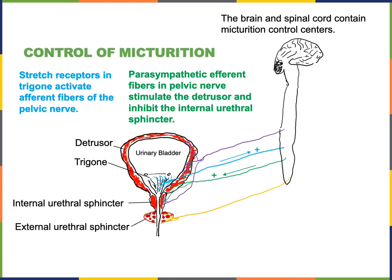The parasympathetic division of the autonomic nervous system sends commands through the pelvic nerve that stimulate contraction of the detrusor and inhibit contraction of the internal urethral sphincter. The parasympathetic efferent fibers release acetylcholine as a stimulus for micturition.